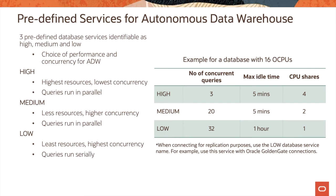Let us now look at the predefined services used for accessing autonomous data warehouse. The three predefined database services are identifiable as high, medium, and low, giving you a choice of performance and concurrency. The high service gives the highest resources and the lowest concurrency, and queries run in parallel when connected using this service.